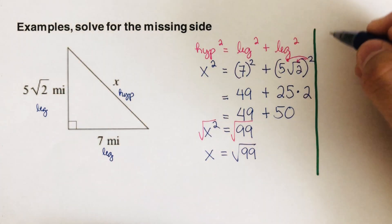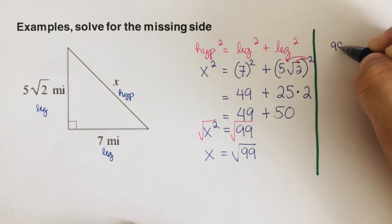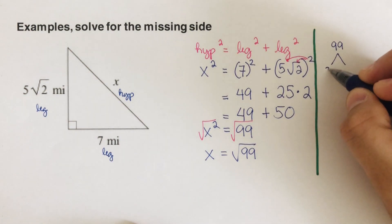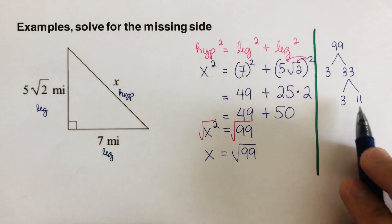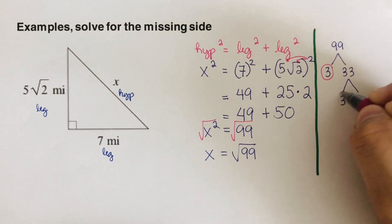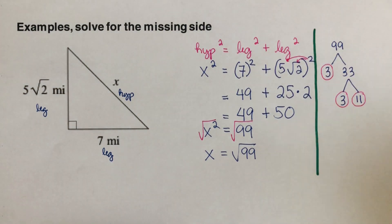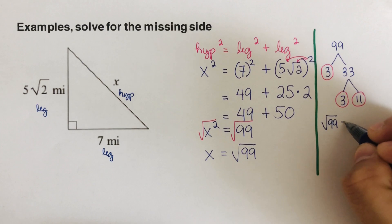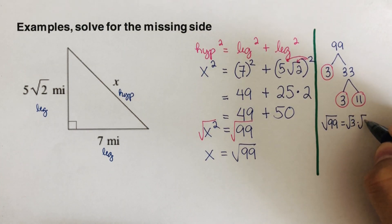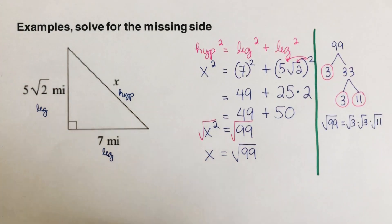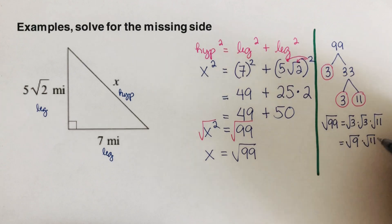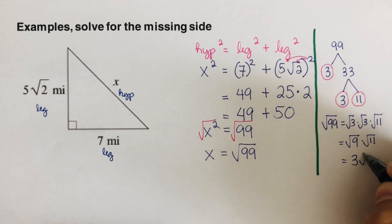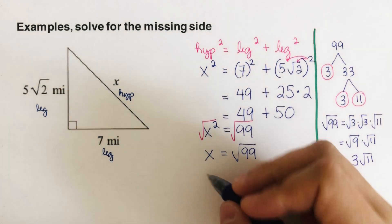So we have the square root of 99. Writing the factor tree: 99 equals 3 times 33, and 33 factors into 3 and 11. Since 3 and 11 are prime, the prime factors are 3, 3, and 11. So square root of 99 equals square root of 3 times square root of 3 times square root of 11. Square root of 3 times square root of 3 is square root of 9, which equals 3. So the final answer is 3 square root of 11.